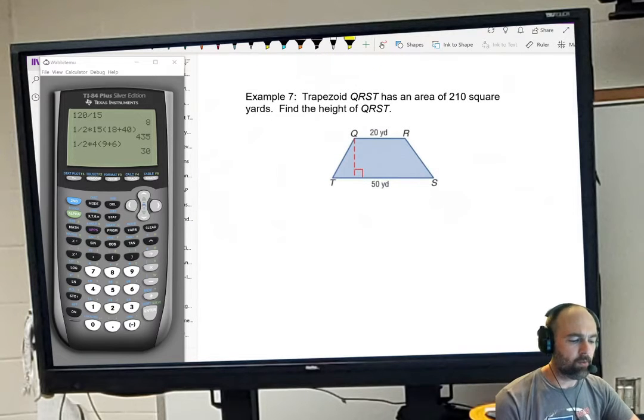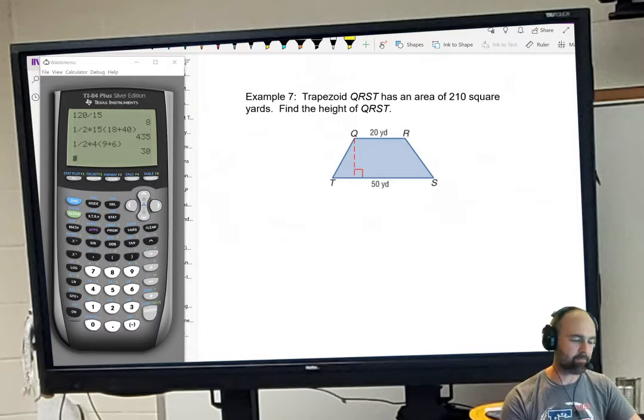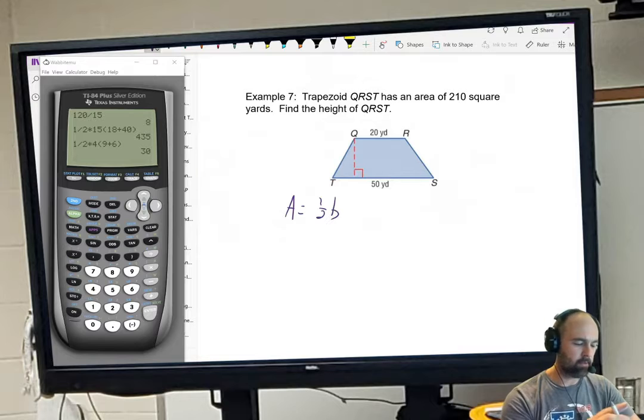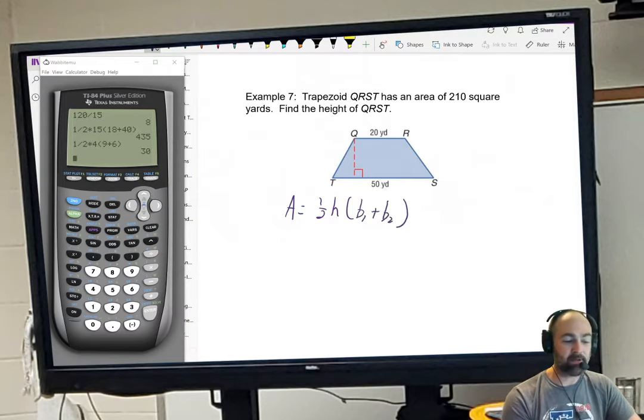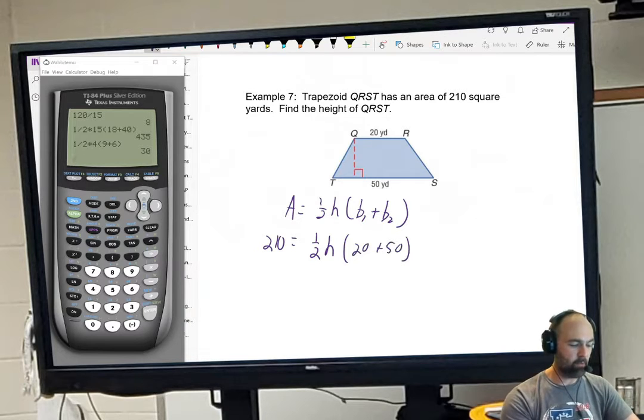All right. The trapezoid has an area of 210. Find the height. Well, again, we're just going to continue the exact same pattern. Put in the formula or write down the formula. I keep writing my h's like b's. One half times h times b1 plus b2. And let's just plug in what we know. Okay, area is 210. One half, height is unknown so I'll leave it as an h. Base one plus base two, well base one is 20 plus base two is 50.